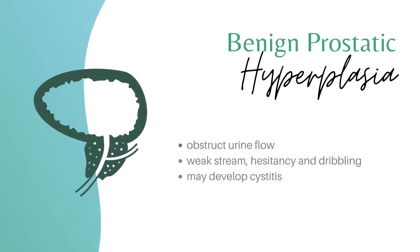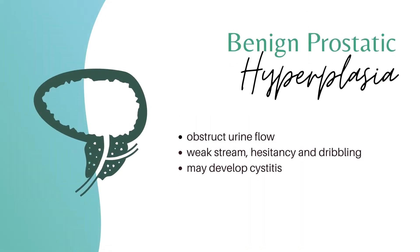Benign prostatic hyperplasia is an outflow obstruction, presenting as weak stream, hesitancy, and dribbling. Due to the retention of urine, it may also develop cystitis on top of the benign prostatic hyperplasia.